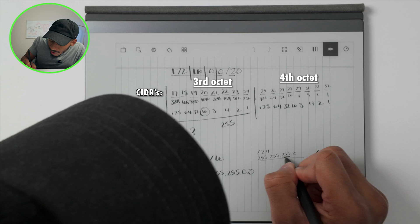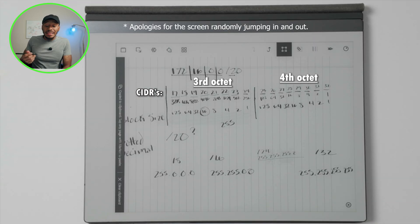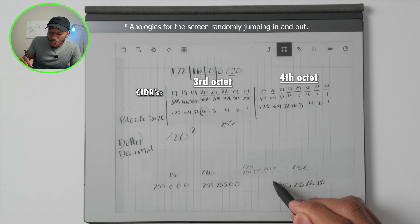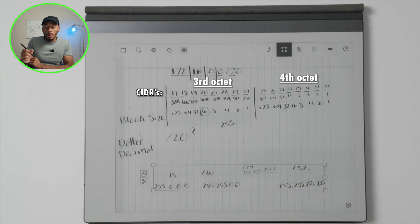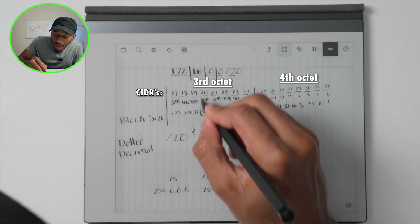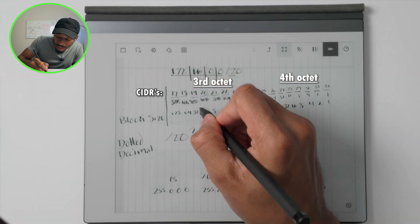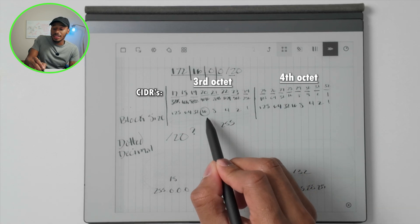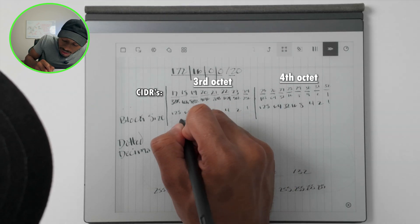But in this case, since we're working with the CIDR notation of a /20, we want to identify what the dotted decimal form factor would be. Well, then we simply come down to where its block size is. We've indicated that its subnets are in increments of 16, and so we'll add everything going to the left.